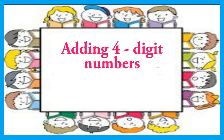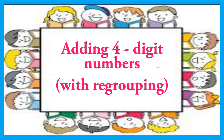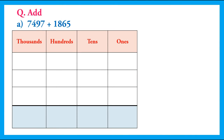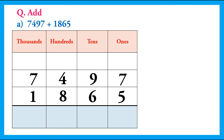Welcome students. Today we will learn adding 4-digit numbers with regrouping. We will add 7497 and 1865. We will write the given numbers below their place values: 7497 and 1865. Now we are going to add them.